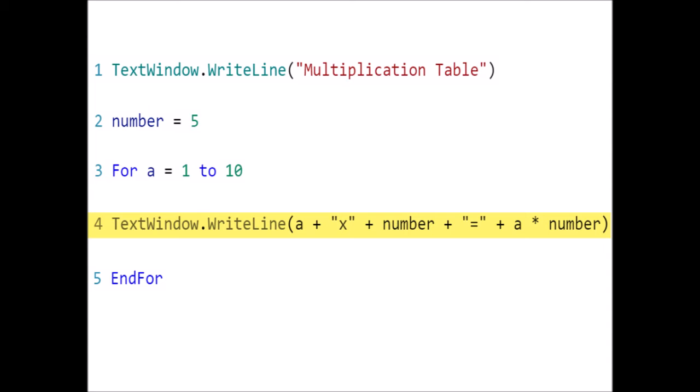In line 4, the WriteLine operation displays the following elements in this order: the value stored in the variable a, the multiplication sign, the value stored in the variable number, the equal sign, and the product of the values stored in variables a and number.